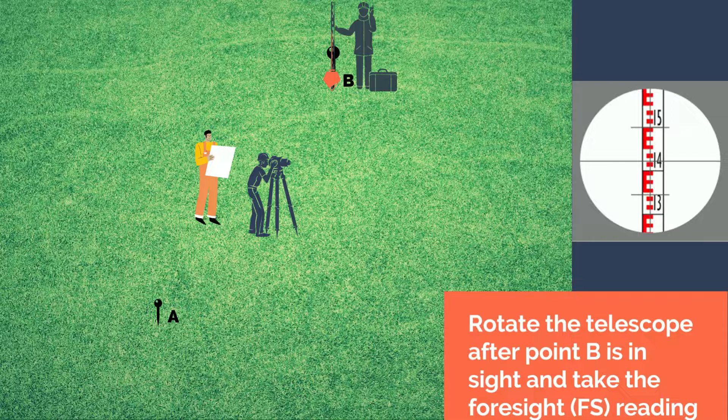The instrument man will take the foresight reading of the leveling rod and again, the reading must be done up to the accuracy of a millimeter or thousandth of meter.